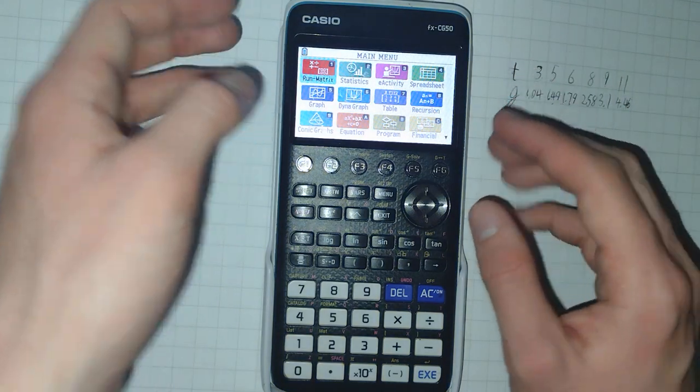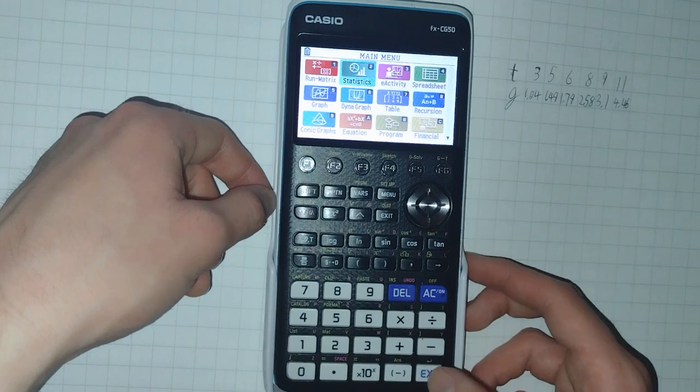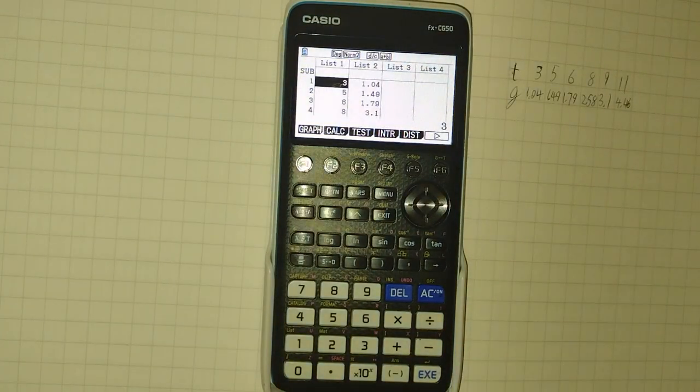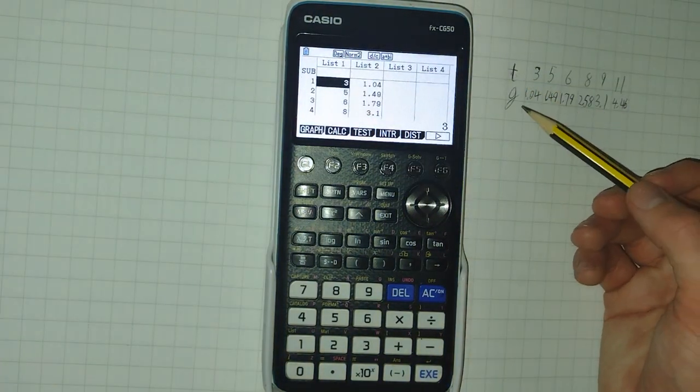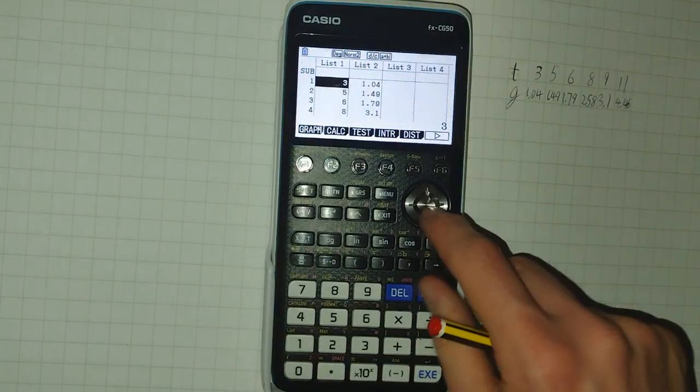Now the main way that we interact with and add lists is in statistics mode, number 2. As you can see here, I have some data, T against G, and I've entered this into the calculator.